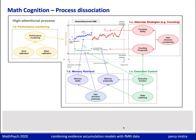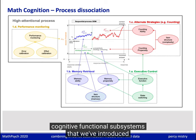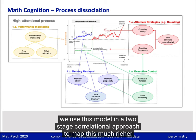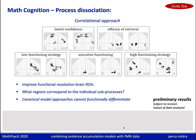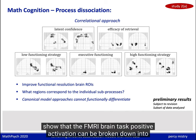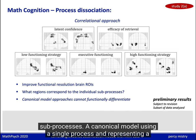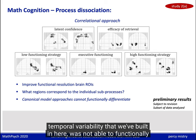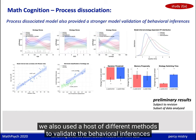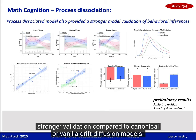Overall, there is a dynamic set of parameters that vary systematically at a trial-by-trial level, hierarchically dependent on a set of novel individual-level parameters that characterize different cognitive functional subsystems. We then used this model in a two-stage correlational approach to map this richer representation of individual differences onto fMRI data, using the cognitive parameters as covariates in a GLM model. Preliminary results show that fMRI brain task-positive activation can be broken down into distinct functional areas based on the different latent variables characterizing subprocesses. A canonical model using a single process was not able to functionally isolate brain regions in such a manner. We also used multiple methods to validate behavioral inferences and showed that the process-dissociated model provided much stronger validation compared to a canonical drift diffusion model.